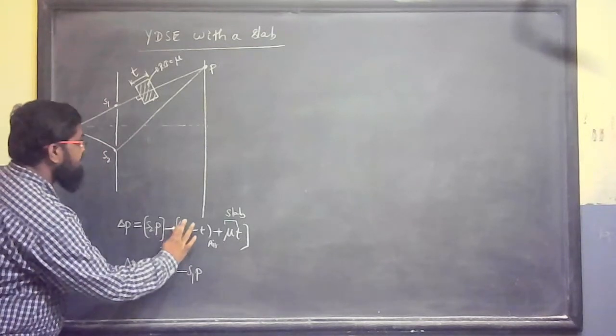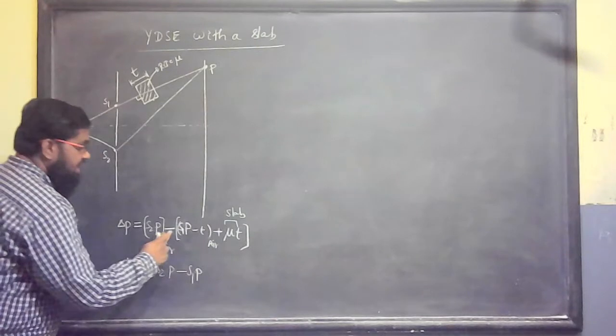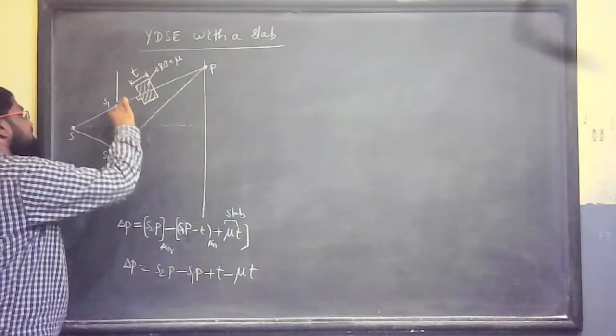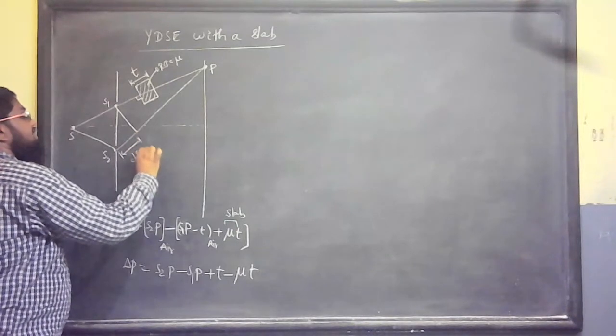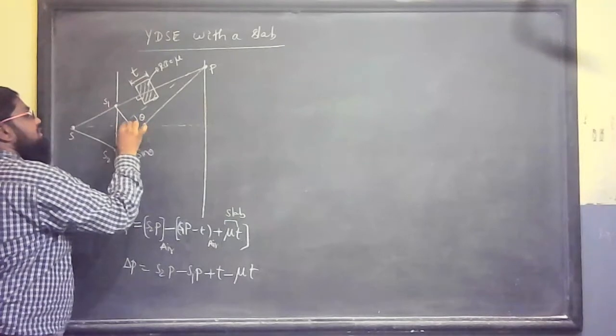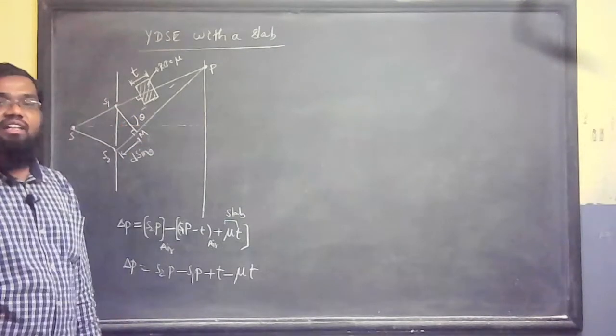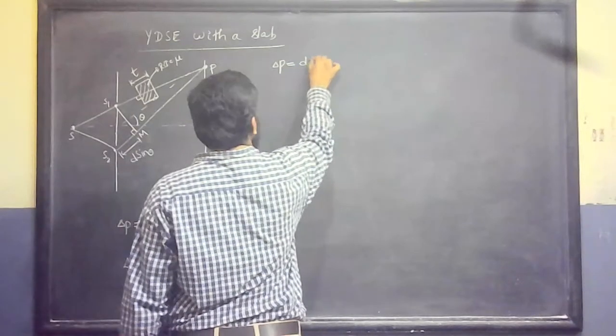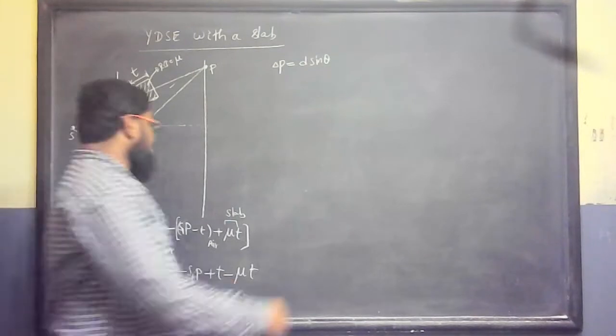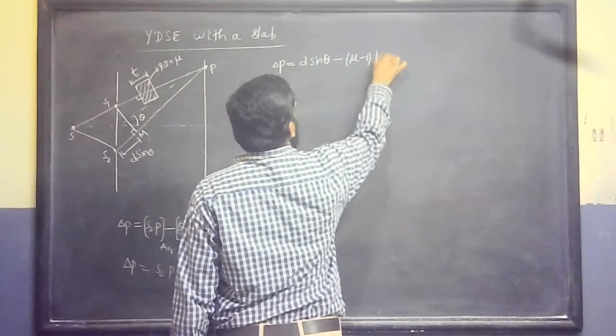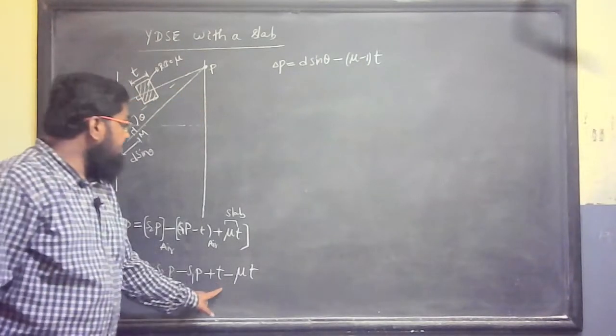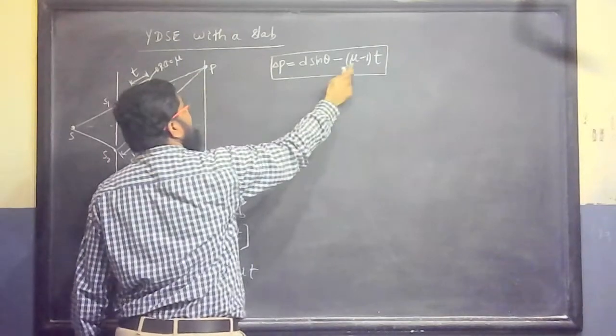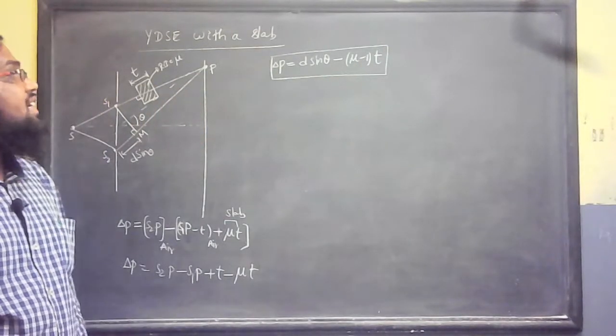Delta P is equal to S2P minus S1P. S2P minus S1P minus T, minus minus plus, plus T minus mu T. But what is this S2P minus S1P? This is as usual, nothing will change. This will be D sin theta. This is the angle. That will remain. Delta P is S2P minus S1P, that is D sin theta minus mu T. If there is no glass slab, thickness 0, mu equal to 1. Delta P equal to D sin theta. T 0 or mu 1.